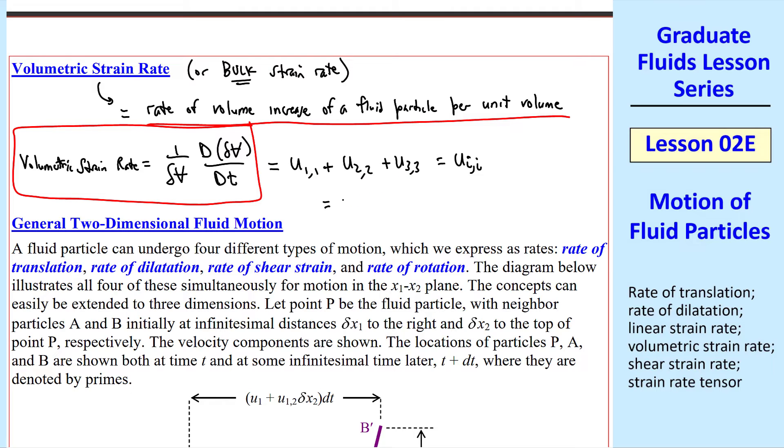If you're still not comfortable with common notation, this simply means del u1 del x1 plus del u2 del x2 plus del u3 del x3, or del ui del xi. So these are the two common ways to write the volumetric strain rate.